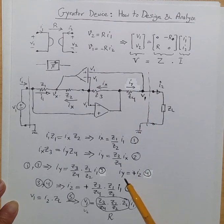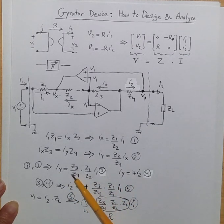Now substituting for Iy from four we have I2 is equal to Z3 over Z4 times Z1 over Z2 times I1. And now this is five. And substituting for I2 from five we get V1 equal to instead of I2 we're going to write this thing Z3 over Z4 times Z1 over Z2 times I1.